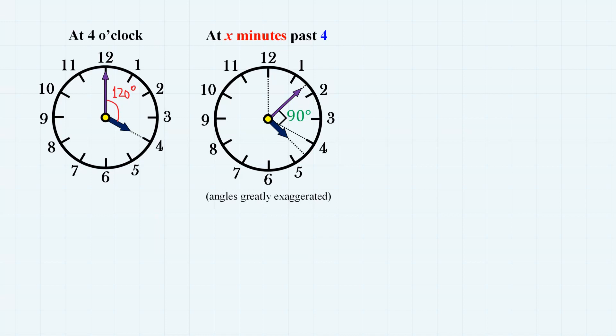Now suppose that the hour and minute hands form the right angle for the first time at x minutes past 4. So we have to find the value of this x. And let's use our previous knowledge.